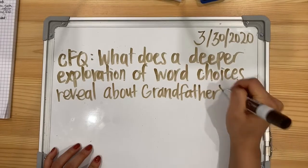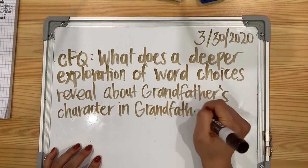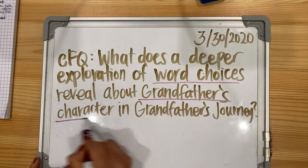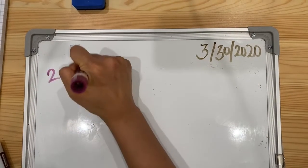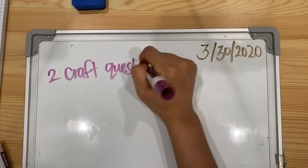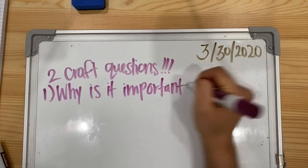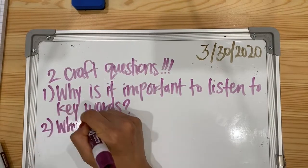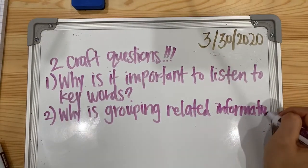Today's content framing question asks: What does a deeper exploration of word choices reveal about grandfather's character in Grandfather's Journey? We're going to be looking carefully at the words that Alan Say chooses to use in his book. We also have two craft questions to answer: Why is it important to listen to key words? And why is grouping related information important?